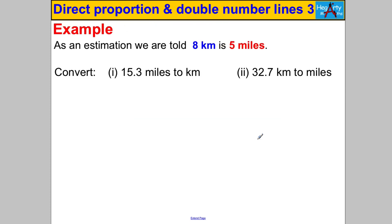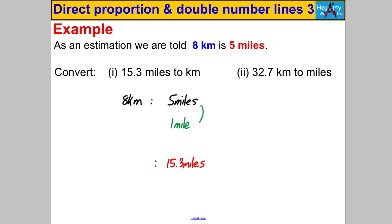Pause the video and have a go. First question: 8 kilometres is 5 miles. I always write that down. I want to convert 15.3 miles to kilometres. It's not obvious how to scale from 5 to 15.3, so first find the unit rate: divide both sides by five to get 1.6 km to 1 mile. Then multiply by 15.3: 1.6 × 15.3.